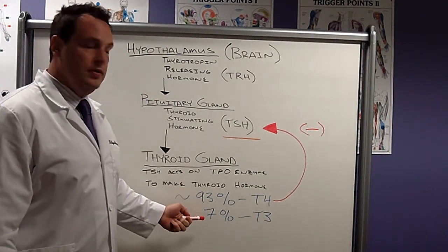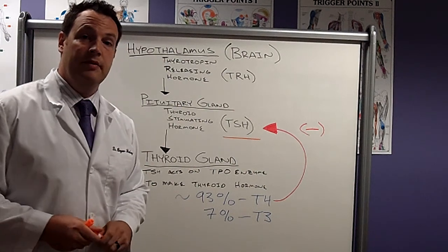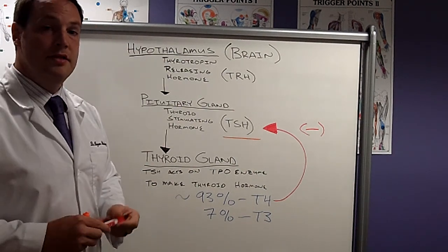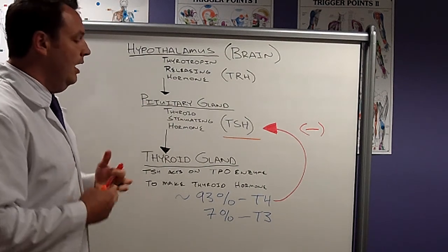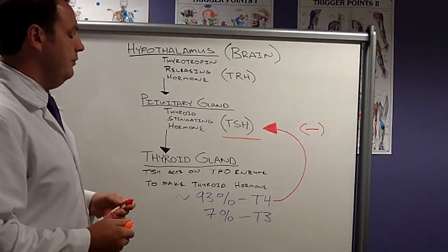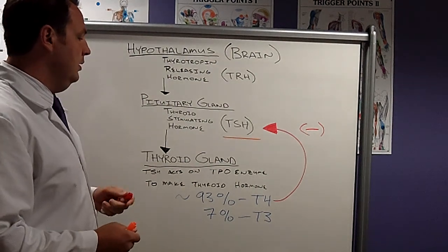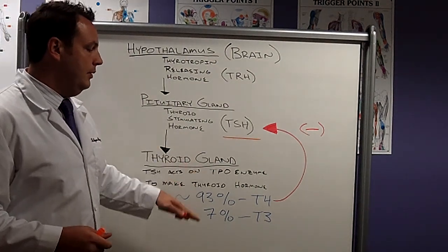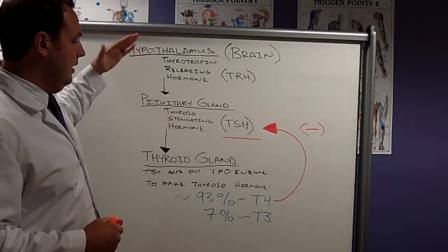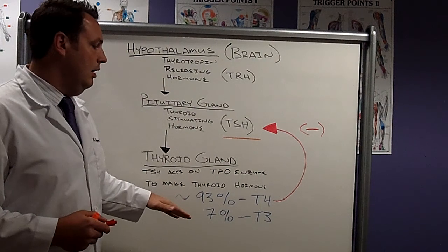As well as 7% is produced as T3, which again is total T3. These tests aren't being run, so we actually don't get an idea of what the thyroid gland is actually producing. If we have an issue with the thyroid gland where we're not producing, it could be stemming from a brain issue, or it could be the actual thyroid gland itself.